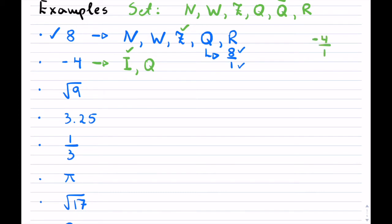You can write any natural whole number or integer just over 1 makes it rational. And that also would be real. That would be the second example.